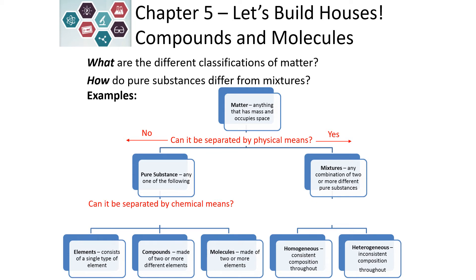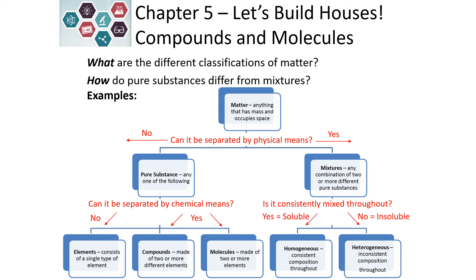Can we separate it by chemical means? Can we use chemical properties or chemical changes to separate it — can we undergo chemical reactions in order to get our substances to separate? If we can't, then it must be an element. If we can separate it by chemical means, then it is a chemical compound or a molecule. Is it consistently mixed throughout? If yes, that means it's soluble — it dissolves into another substance. If it is not consistently mixed throughout, it means it's insoluble and does not dissolve.